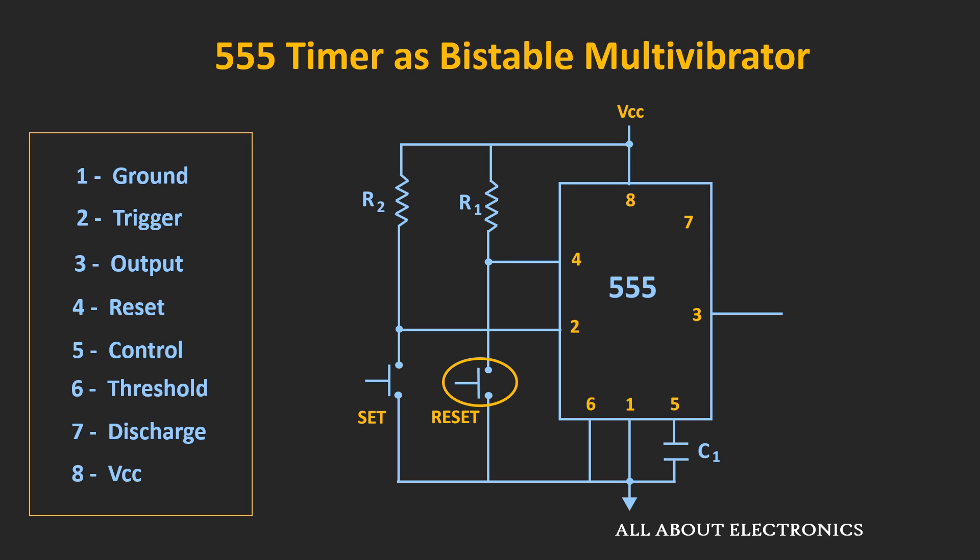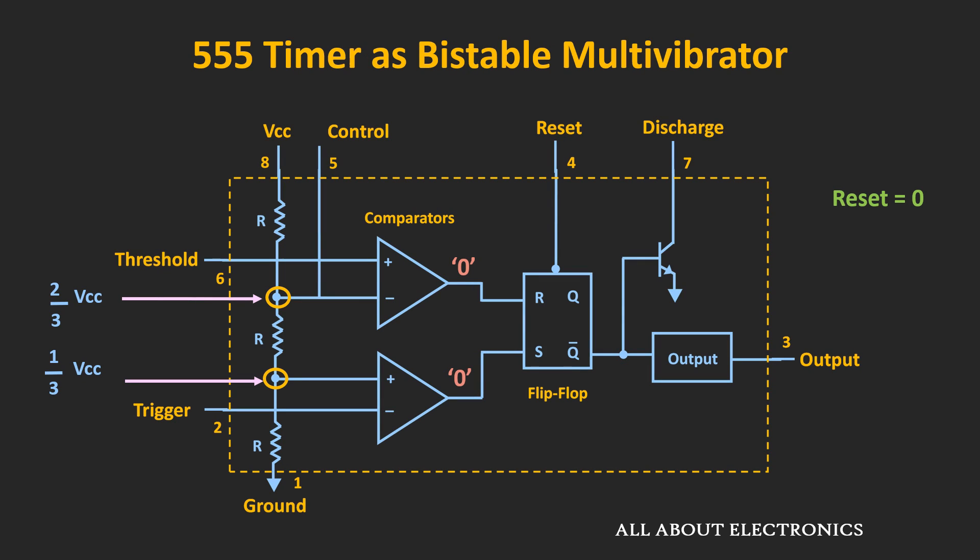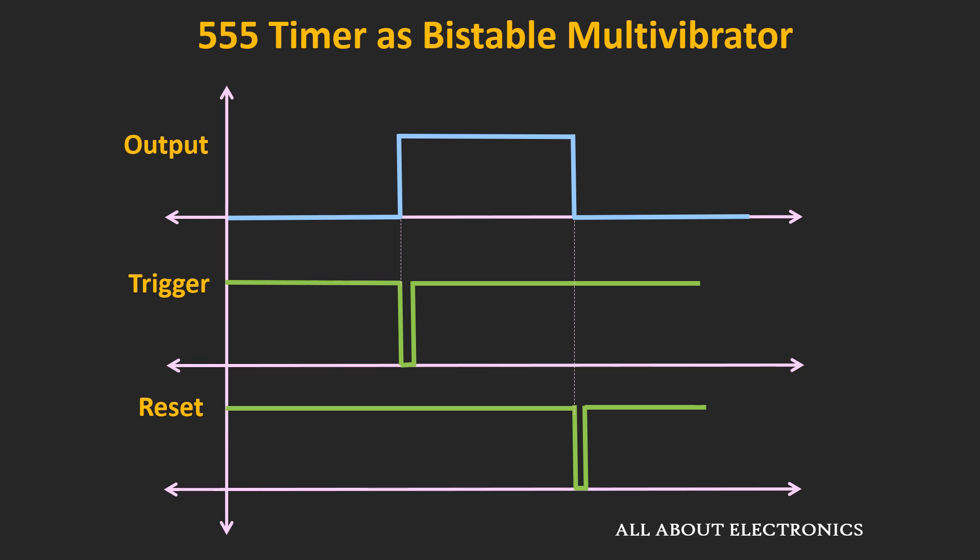Now let's see what happens when we press the reset switch. Whenever the reset switch is pressed, then momentarily this reset pin is connected to the ground terminal, or we can say the reset pin will be at logic zero. In this case, the flip-flop will get reset to logic zero, and hence the output of the 555 timer will also be equal to logic zero. Since we are not changing the input at the trigger and the threshold pins, even after releasing the reset pin, the output of the 555 timer will remain at logic zero.